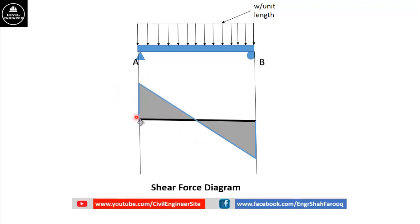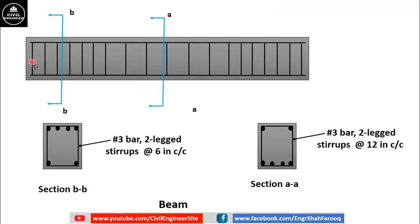So at support we need maximum shear reinforcement while at midspan no or less shear reinforcement is required. This is the reason why in beams the spacing between the stirrups are less as compared to the spacing between the stirrups at midspan.